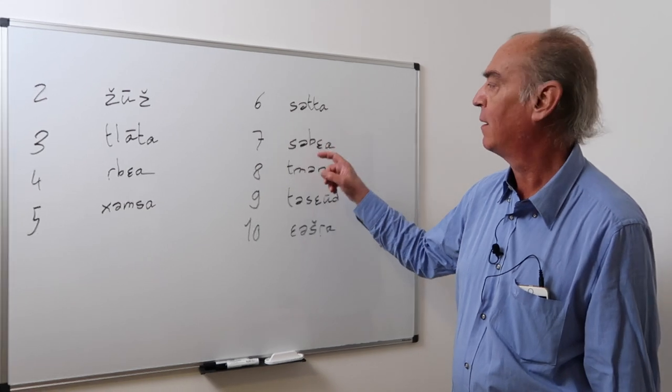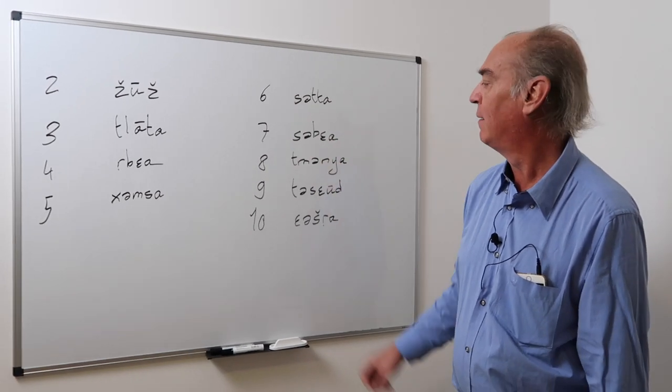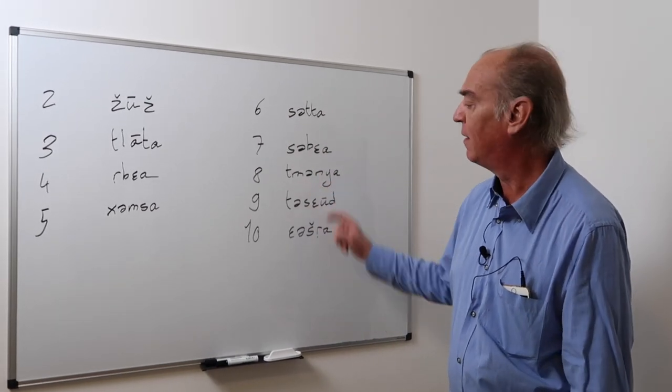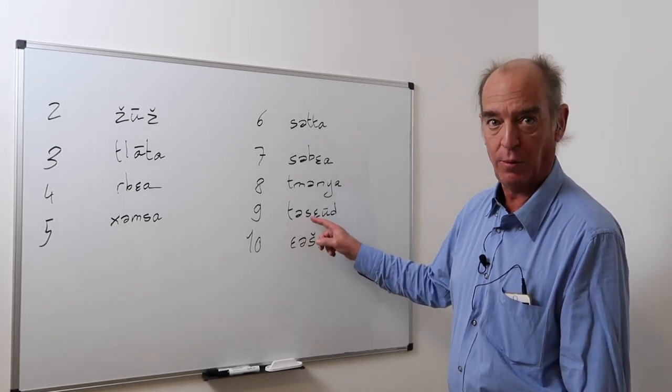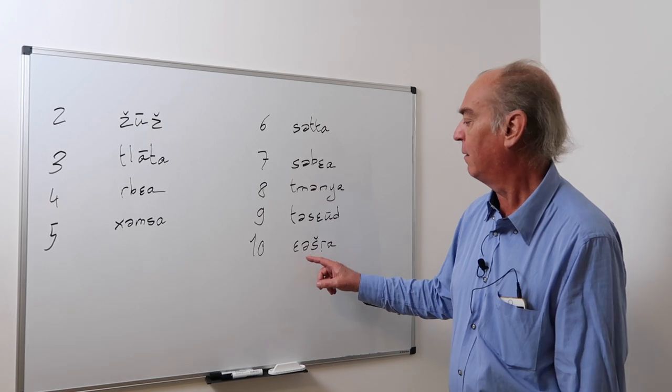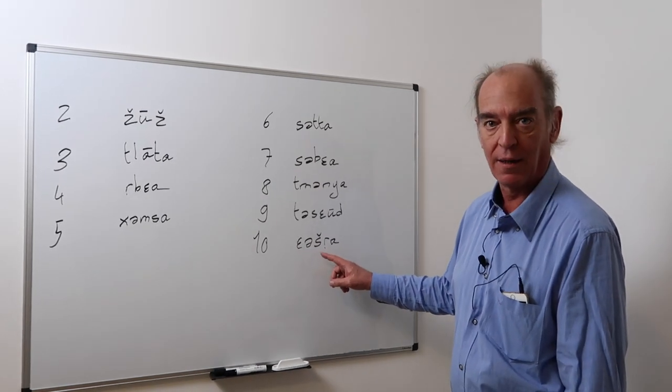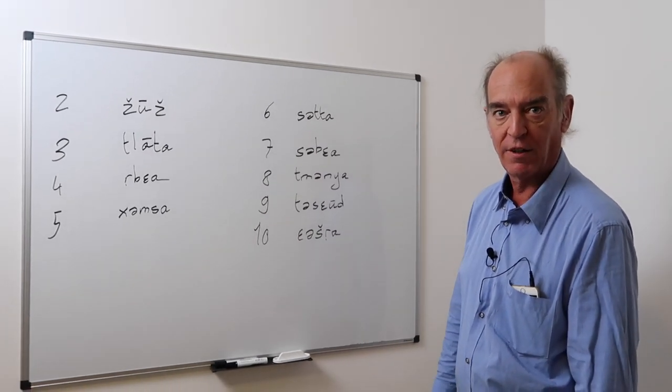And now from 6 to 10. Setah, sb'ah, tsm'ni'ah. Take care of this. Tsa'ud. And finally, ashra with a strong ha.